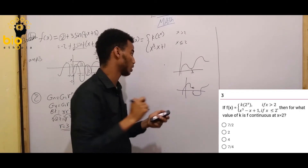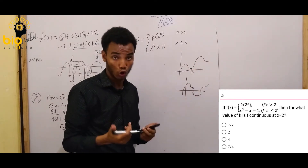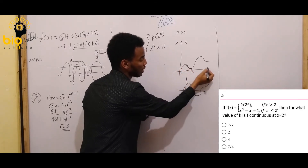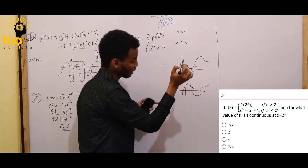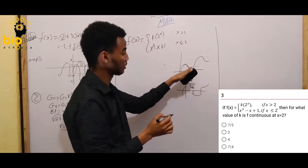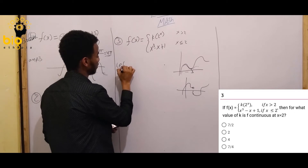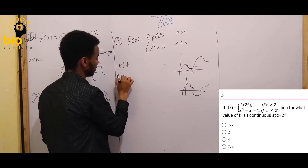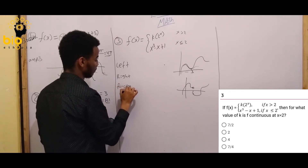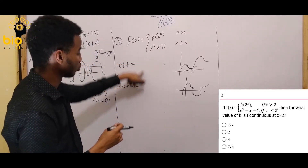To check continuity, we verify three conditions: the limit from the left, the limit from the right, and the functional value. The functional value must equal the limit value. So we check the functional value and the limit at x equals 2.